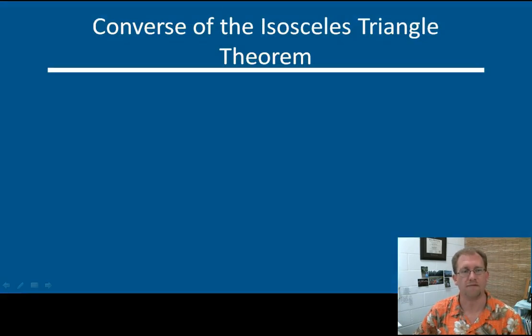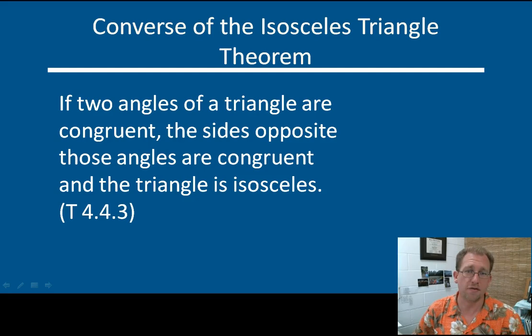There you go. We've demonstrated that already. And that leads us to another theorem. The converse of the isosceles triangle theorem does work in this particular time. You can't always assume the converse. Remember that's a common fallacy. But in this case the converse also holds true. So if two angles of a triangle are congruent, then the sides opposite those angles are congruent and the triangle is an isosceles. You can't have two angles of a triangle be congruent to each other unless that triangle is an isosceles triangle.